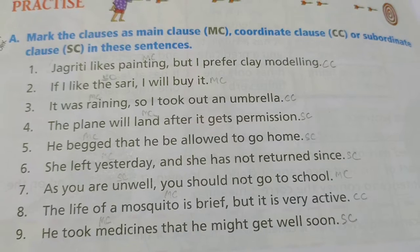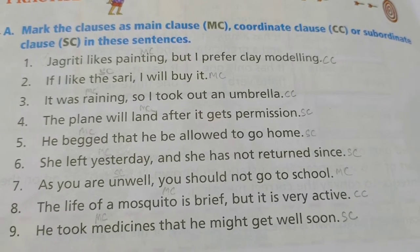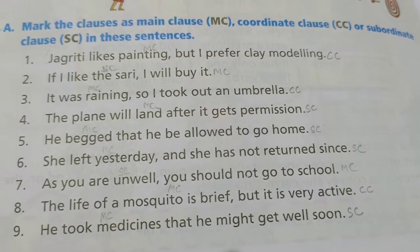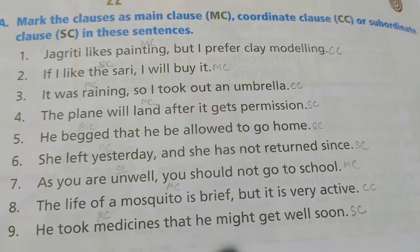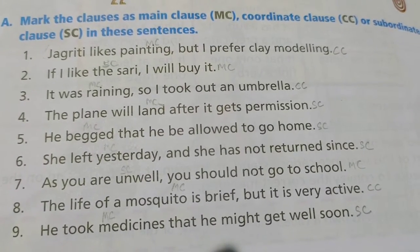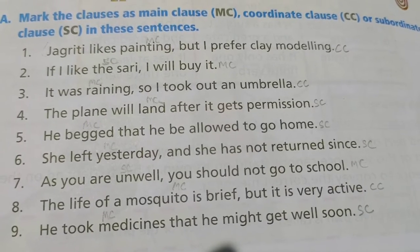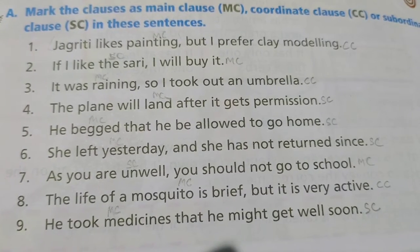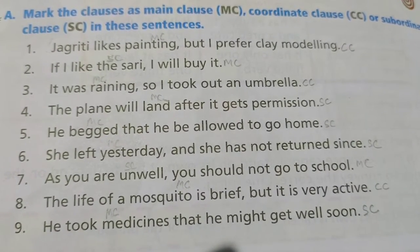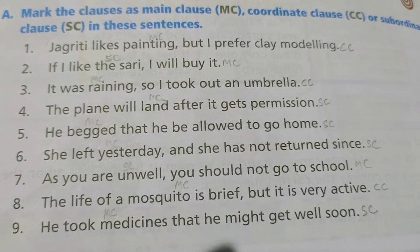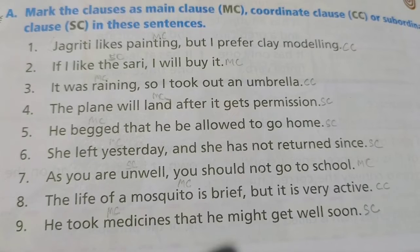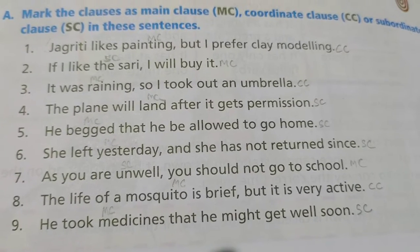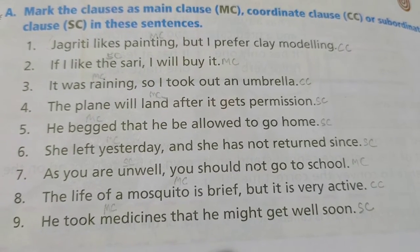First: 'Jagriti likes painting' is main clause; 'I prefer clay modeling' is coordinate clause. Second: 'If I like the sari' is subordinate clause; 'I will buy it' is main clause. Third: 'It was raining' is main clause; 'I took out an umbrella' is coordinate clause. Fourth: 'The plane will land' is main clause; 'after it gets permission' is subordinate clause.